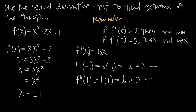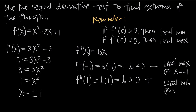The second derivative test tells us that a negative answer (less than zero) means the critical point is a local maximum, so there is a local maximum at x equals negative 1. A positive answer (greater than zero) means the critical point is a local minimum, so there is a local minimum at x equals positive 1. The function f of x therefore has a local max at x equals negative 1 and a local minimum at x equals positive 1.